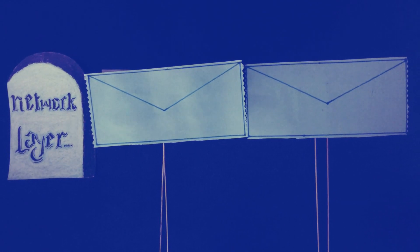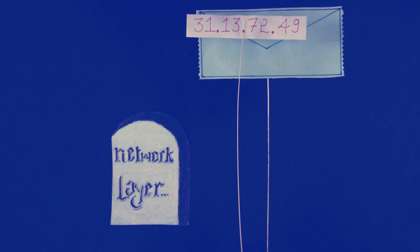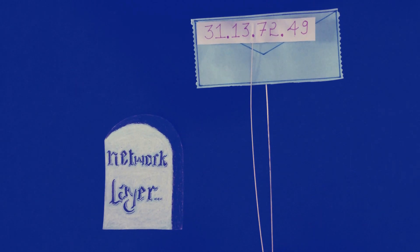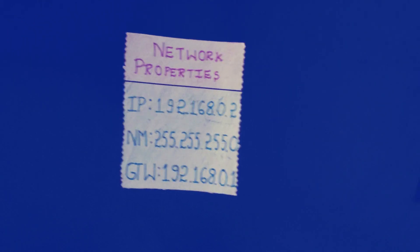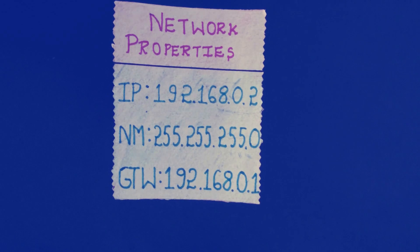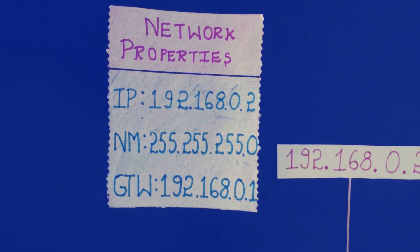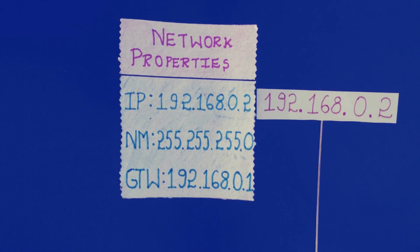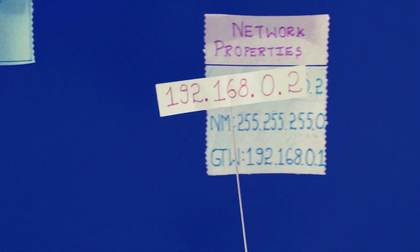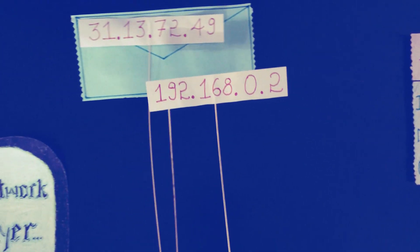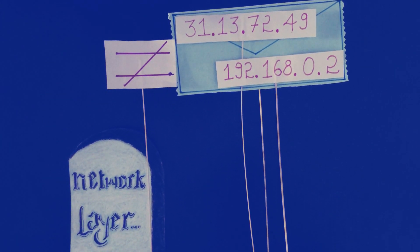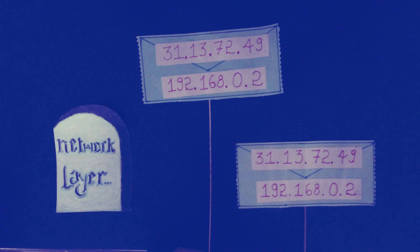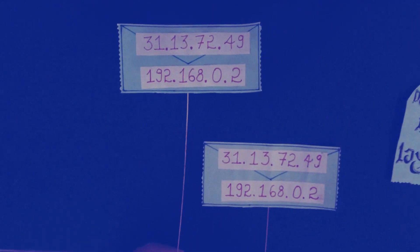The encapsulation is completed. The network layer adds IP address information to each packet, and the destination IP address is now added. The network layer then compares the destination and source IP address. If they do not belong to the same network, the packet is sent to the gateway, and the network layer sends the packets down to the data link layer.